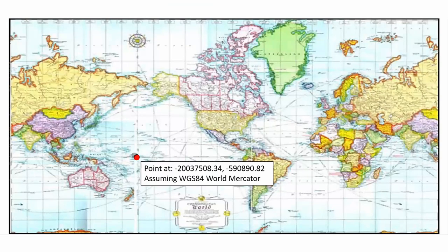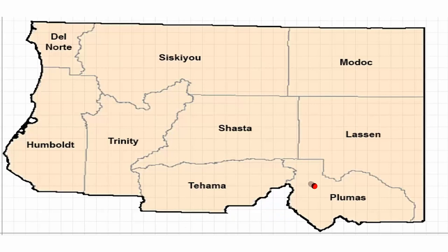When working with a projected coordinate system, we get points at real-world coordinates. For example, a WGS World Mercator map has a point at approximately minus 20 million and minus 590,000 — in meters, the distance from the origin of that WGS 84 Web Mercator map. It's still a Cartesian system measured from the origin of that projection. There are also projections covering smaller areas — like state plane projections in California focused on Northern California — allowing for more precise mapping in that specific region.